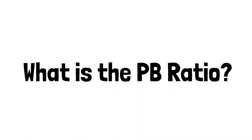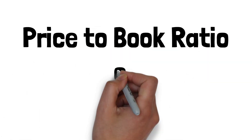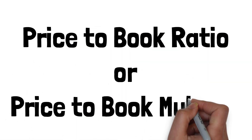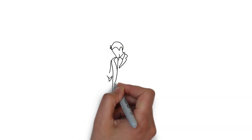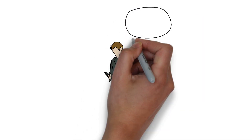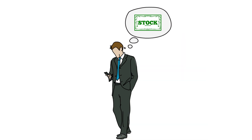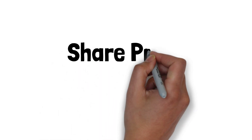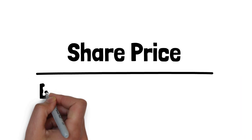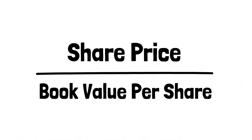What is the PB ratio? The price-to-book ratio, or price-to-book multiple, is a valuation metric used by investors to determine how much they're willing to pay for a company's stock compared to the book value of that company. It's calculated by taking the company's share price and dividing it by the company's book value per share.